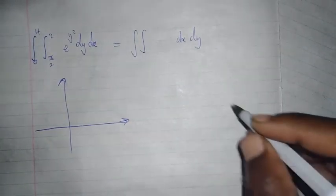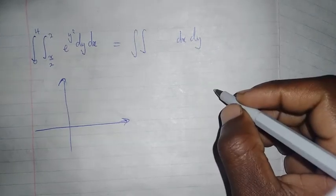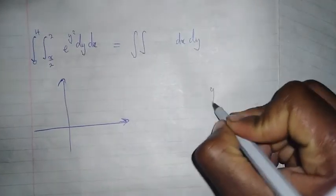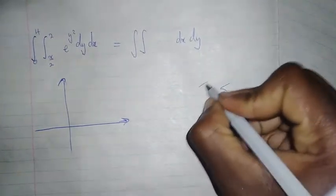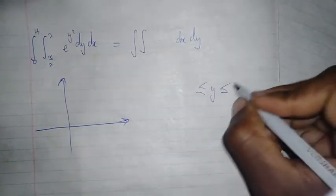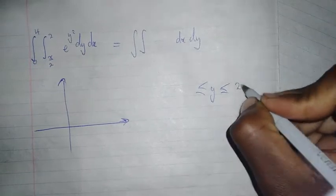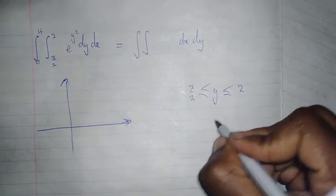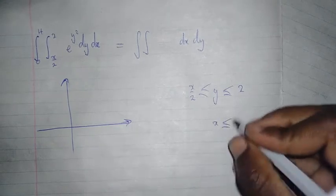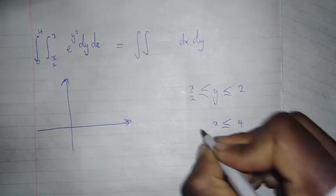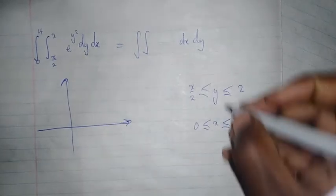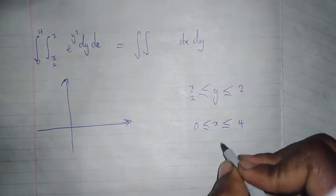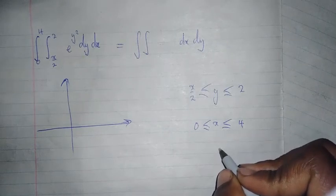I'm just going to rush through the explanation on how to sketch it. You need to make use of limits. For y, the limits for y are ranging from 0 to 4, so from this limit I'm going to determine that y is equal to x over 2.